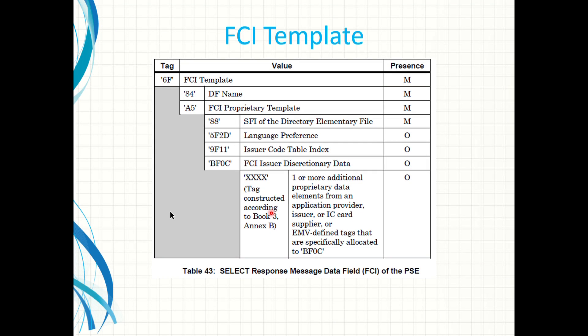This is an example of a template called the file control information template. An EMV card will always respond with the file control information after a successful select command. We should see that in the next video. It has four mandatory fields and other optional fields. There are other templates within the specification but I am going to explain this template with an example to make it easier to understand the others if you come across any.